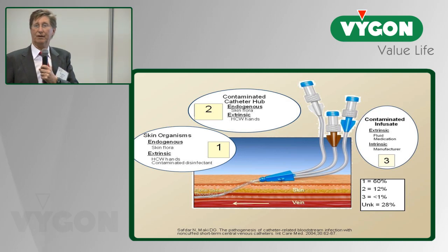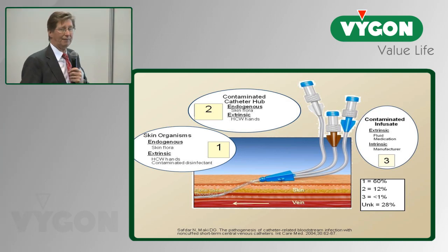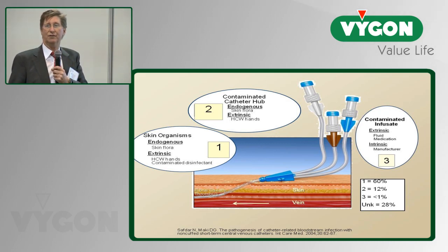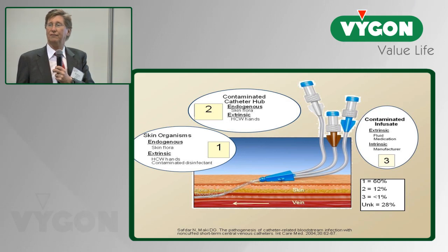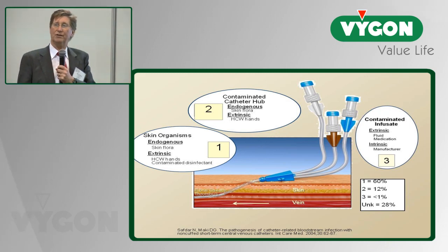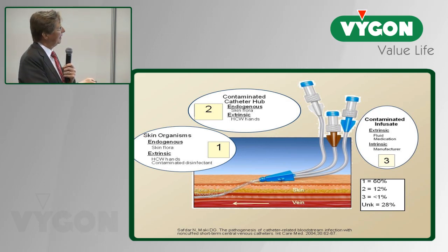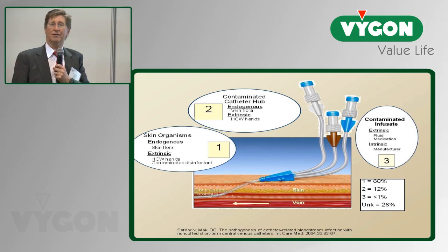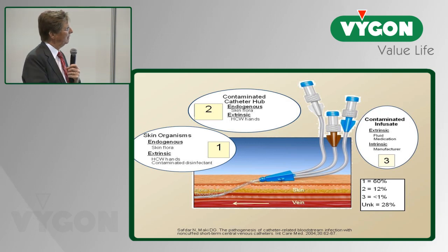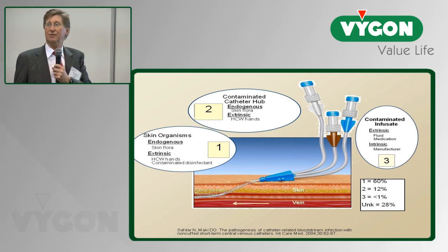We also need to remember where the bugs come from that cause these infections. Contaminated infusates, whether intrinsic or extrinsic, virtually doesn't happen anymore in the United States and North America. Intrinsic contamination was last documented in IV fluids in the late 1970s. Extrinsic contamination also rarely occurs now. Contamination of the hub, either through the patient's skin or our skin, is thought to account for maybe 12 to 20% of bloodstream infections. The most important and most common are skin organisms—the patient's own skin organisms or our skin organisms.